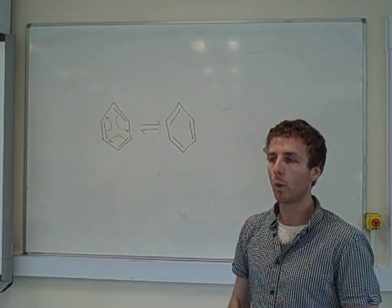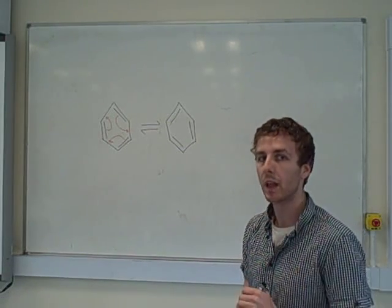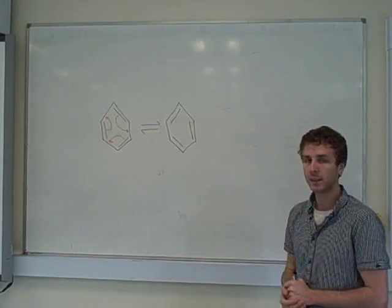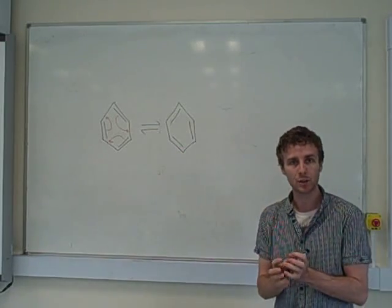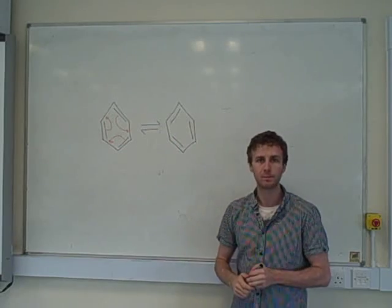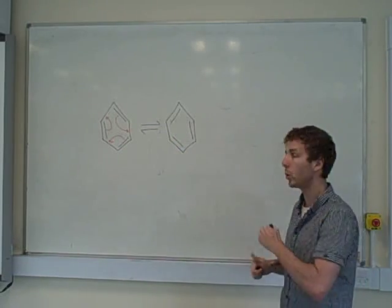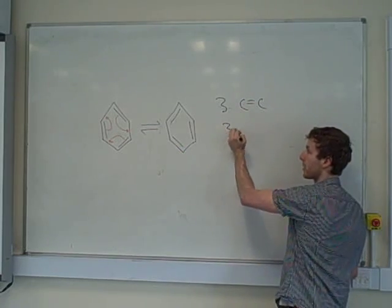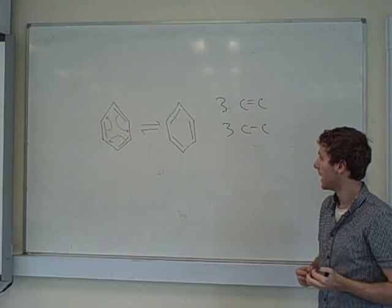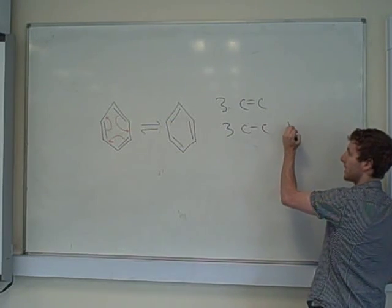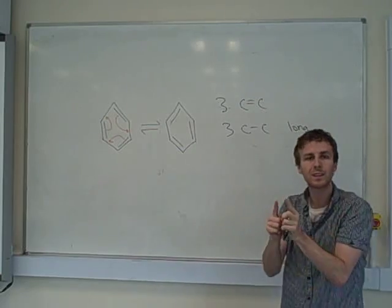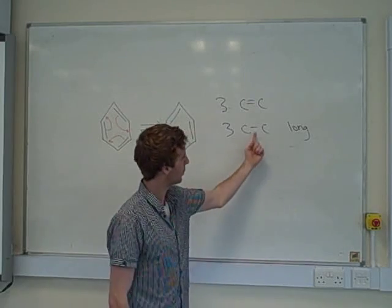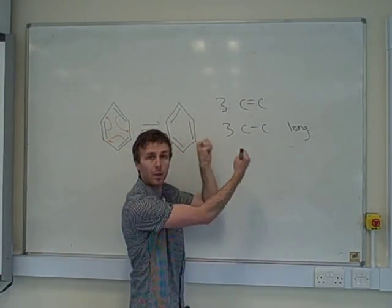But there were two bits of evidence which disproved his model. And the first one was when a young lady, forget her name now, and this lady used X-ray crystal diffraction to measure the actual bond length of benzene. Now, according to Kekule's model, we have three carbon-to-carbon double bonds and three carbon-to-carbon single bonds. Now, a carbon-to-carbon single bond is actually quite long. If you measure the distance of the bond, it's quite a long bond.